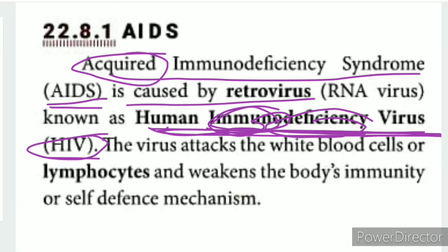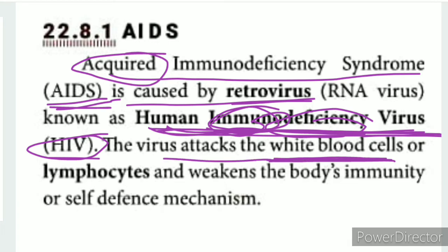The retrovirus responsible for AIDS is commonly called HIV. The virus attacks the white blood cells. White blood cells act like soldiers in our body. This virus attacks the lymphocytes, weakening the body's immunity and self-defense mechanism.